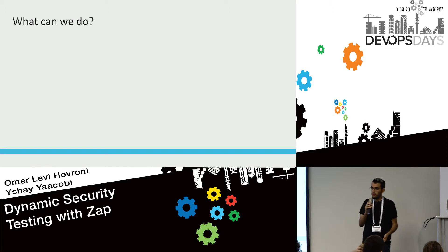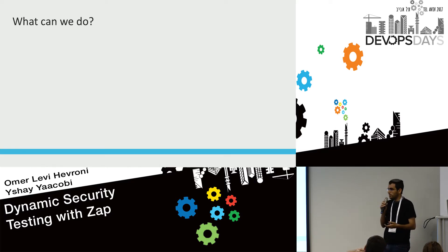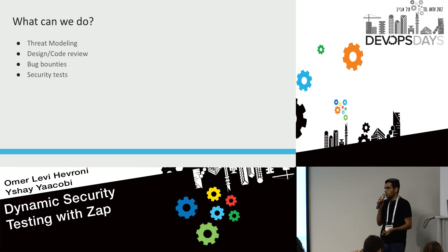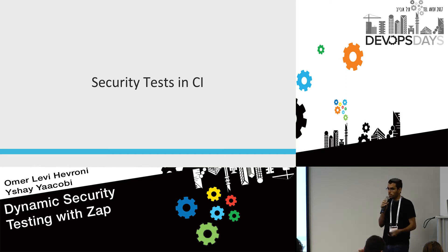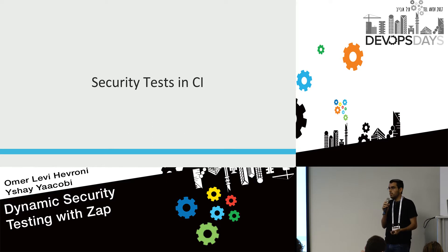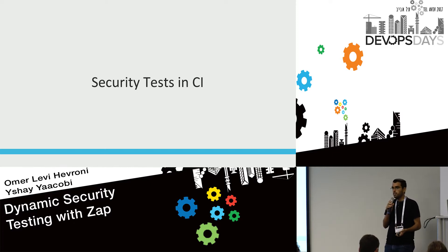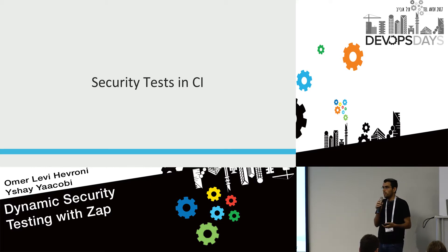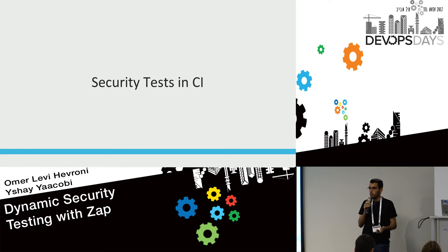This is basically what I do at my work as the security department at Saluto, and I've been doing it for the last three years. There are many things you can do — threat modeling, design review, code review, bug bounties, and of course security testing. We're going to focus on how to build security tests, run them in the CI, and create tests that give high value, are simple to integrate, and are free.